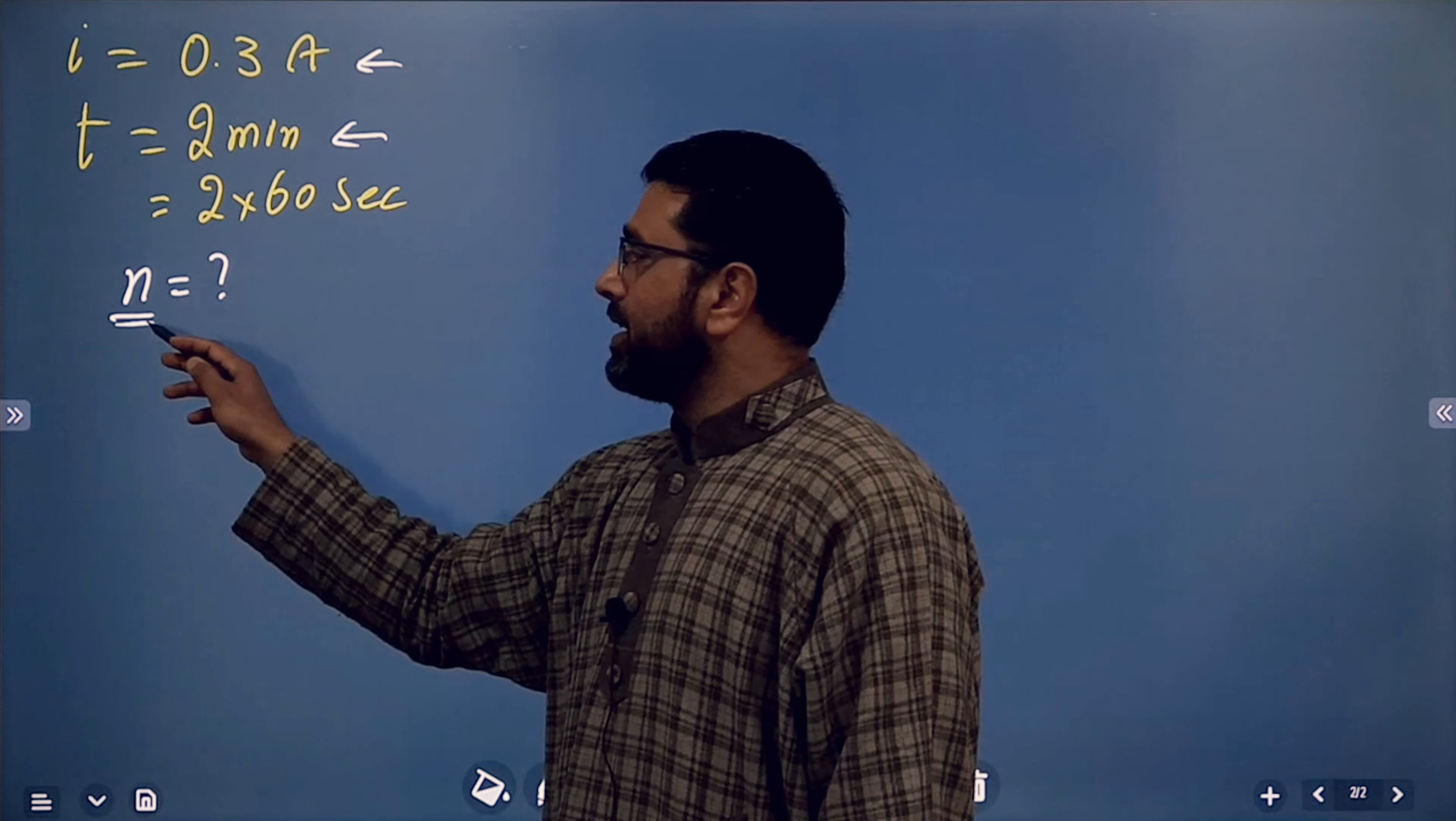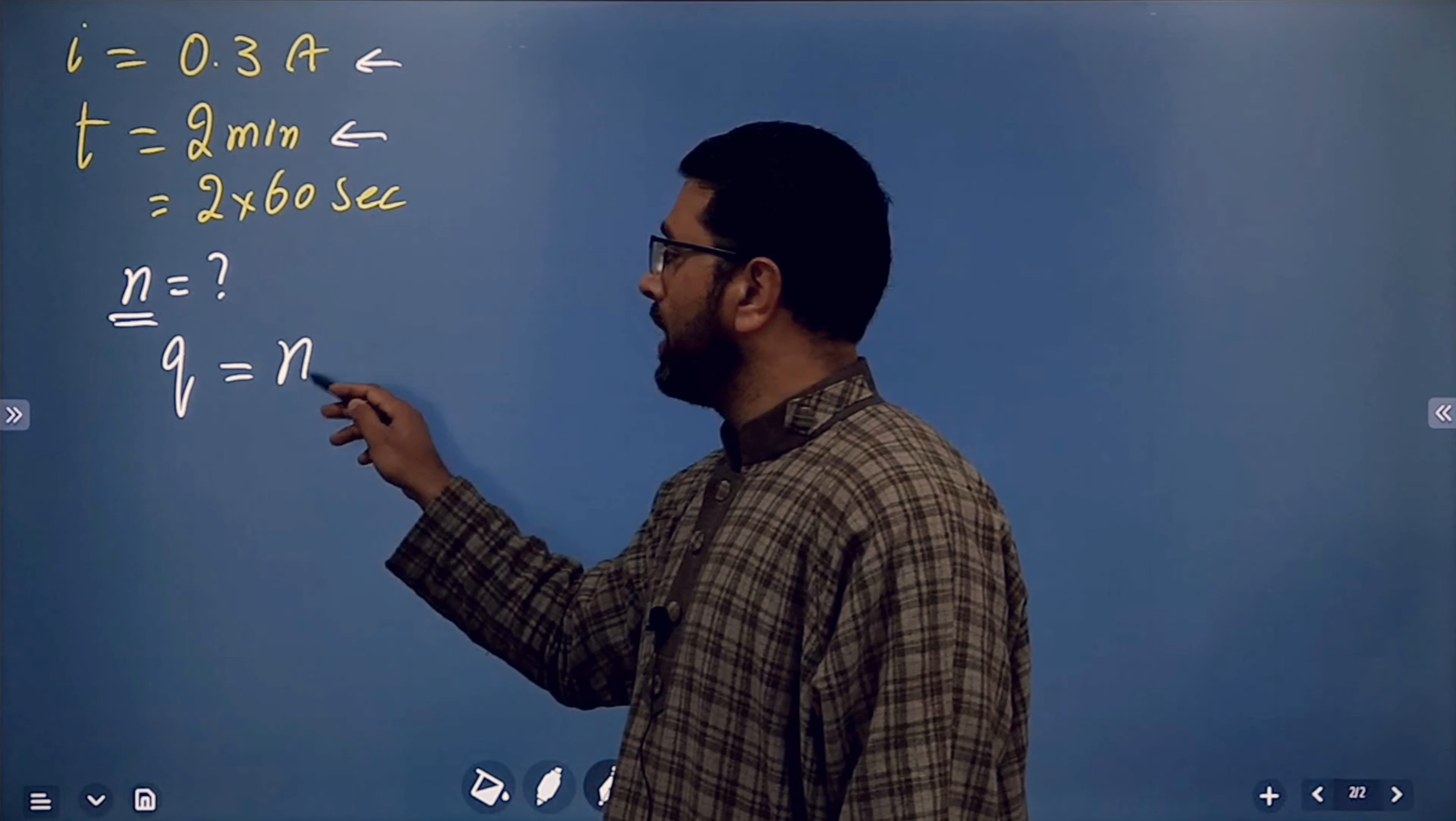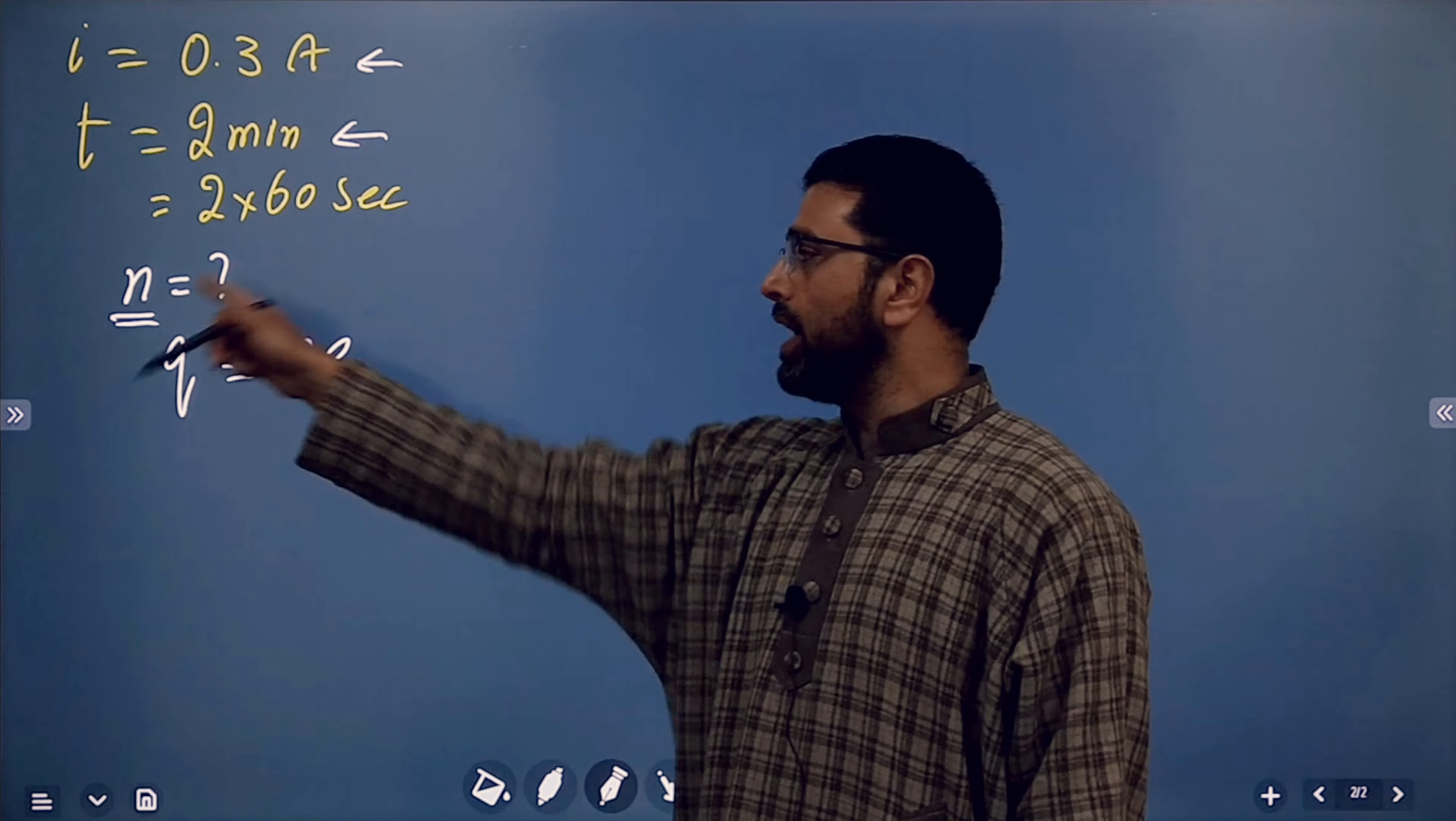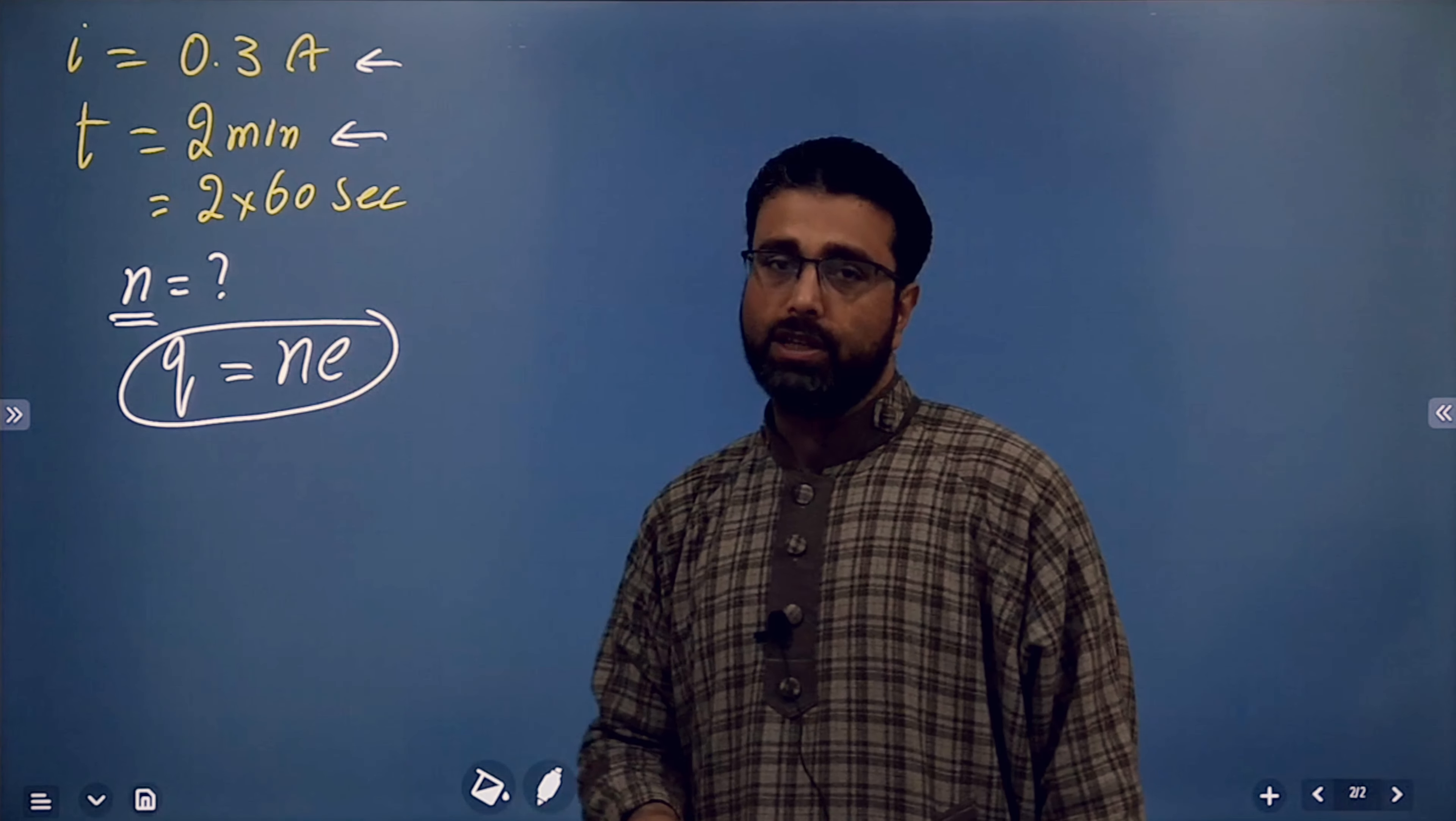If n is the number of electrons passing through your chest, then charge is equal to n times e. Every electron has a charge of e, so n electrons will have a charge of ne. So this charge is flowing through your chest.